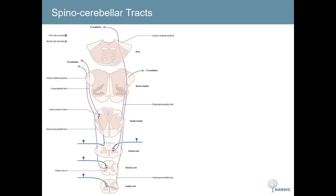Next up is the spinocerebellar tract, the last of the sensory tracts we will cover today. There are in fact several spinocerebellar tracts. They carry the same sensations as the dorsal columns — proprioception, vibration, and discriminative touch — though depending on the tract, the sensation is carried in a slightly different way. We'll start with the tract that carries information from the lowest dermatomes, L3 to S5: this is the ventral spinocerebellar tract.